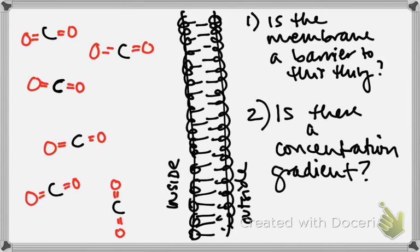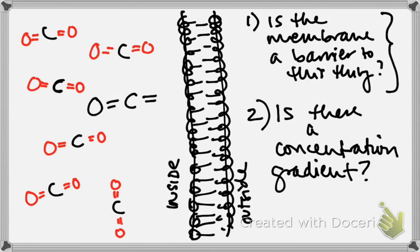Now we've got lots of carbon dioxide built up inside the cell. The first thing we have to ask is: is the cell membrane a barrier to this particular thing? We know non-polar things can cross the membrane as if it's not even there, while polar things generally need a passageway and can't cross through the middle of this membrane. So we have to figure out what carbon dioxide is. When you build this molecule and work out what kinds of bonds are there, you might think 'oh, the oxygens are aggressive about electrons — this is going to act magnetic.' But the usual thing happens where we have to look at the whole molecule.